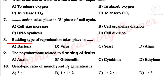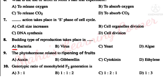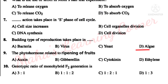Budding type of reproduction takes place in — Option A: Bacteria. Option B: Virus. Option C: Yeast. Option D: Algae. Correct answer: Option C — Yeast.